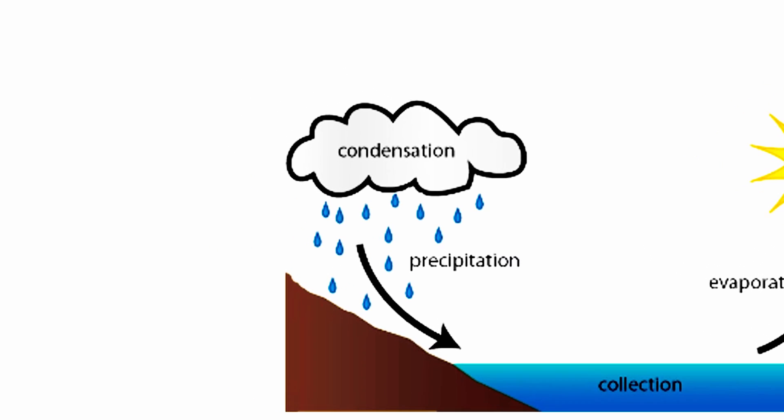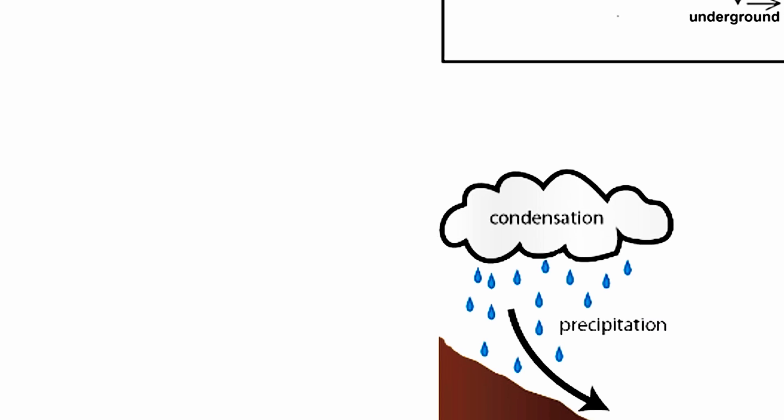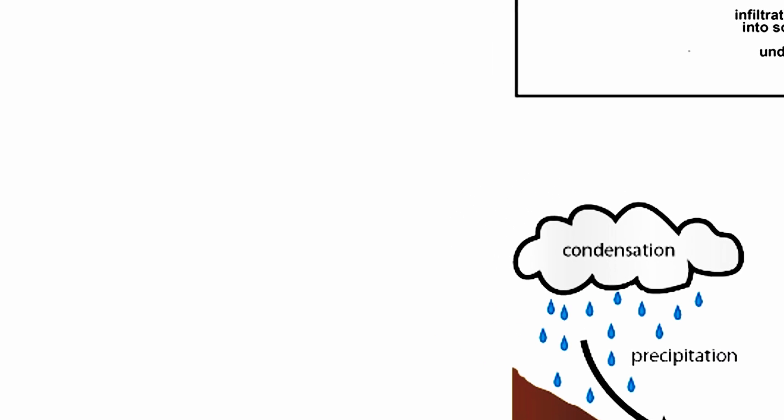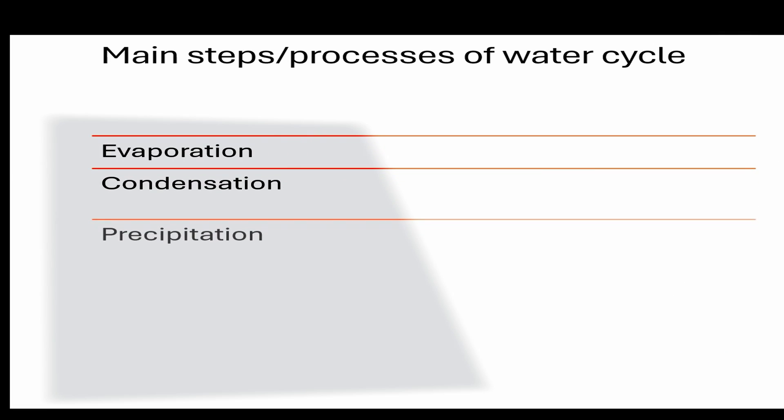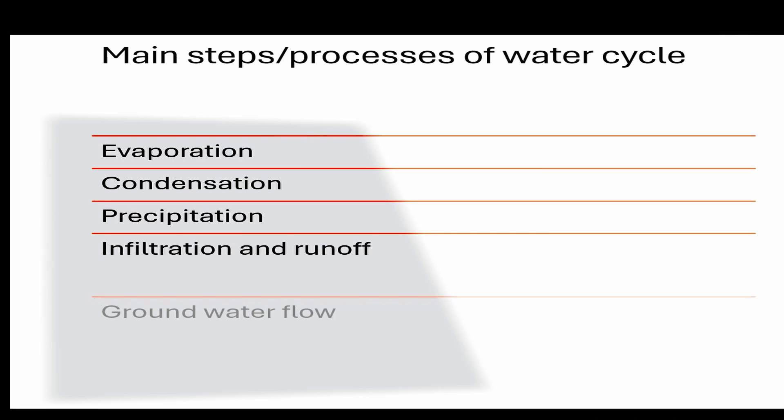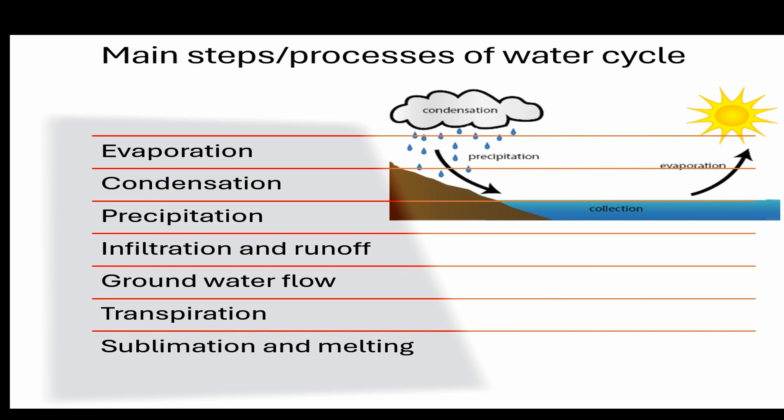The water moves from one reservoir to another, such as from river to ocean, or from the ocean to the atmosphere, by the physical processes of evaporation, condensation, precipitation, infiltration, surface runoff, subsurface flow, transpiration, melting, and sublimation.